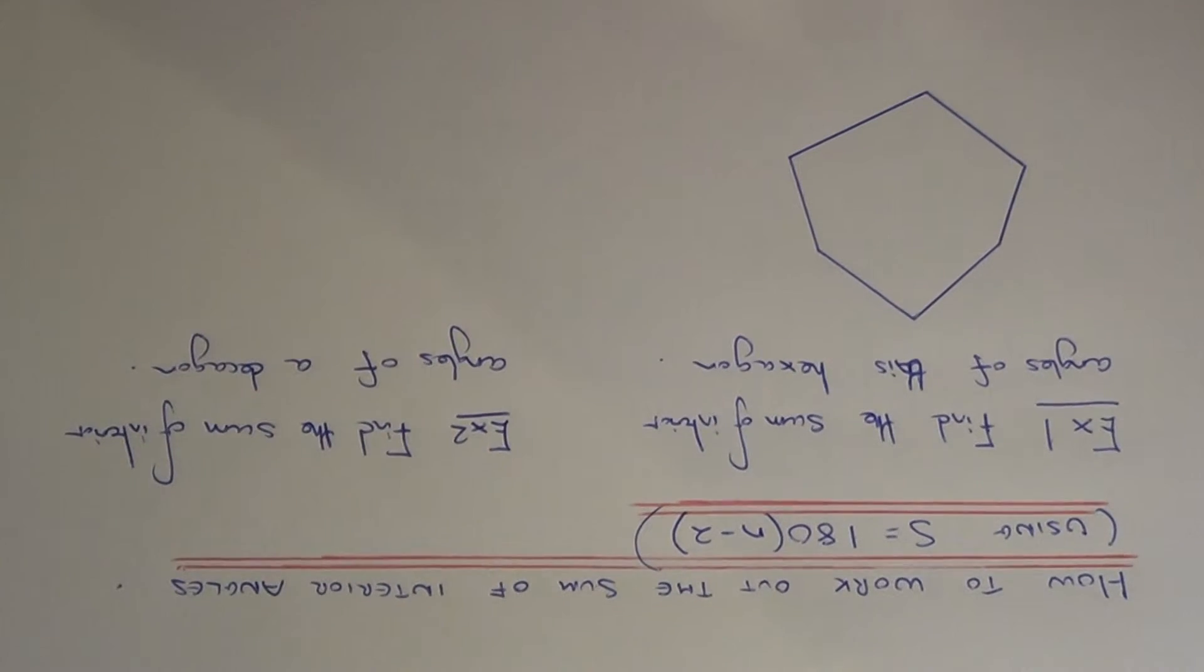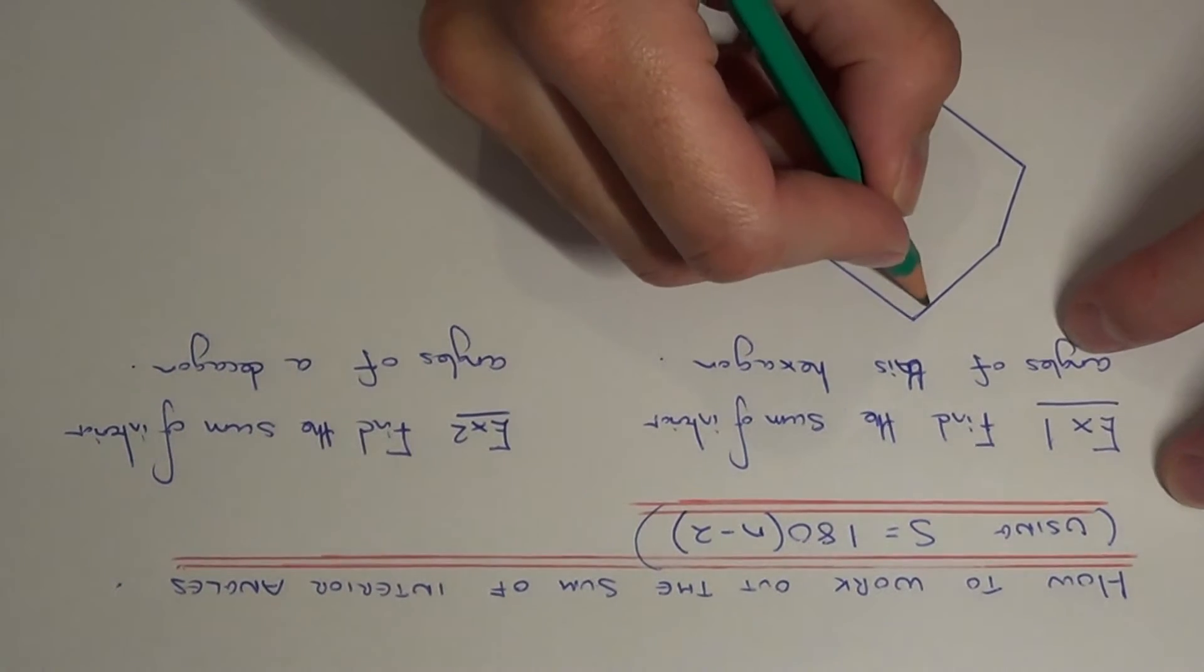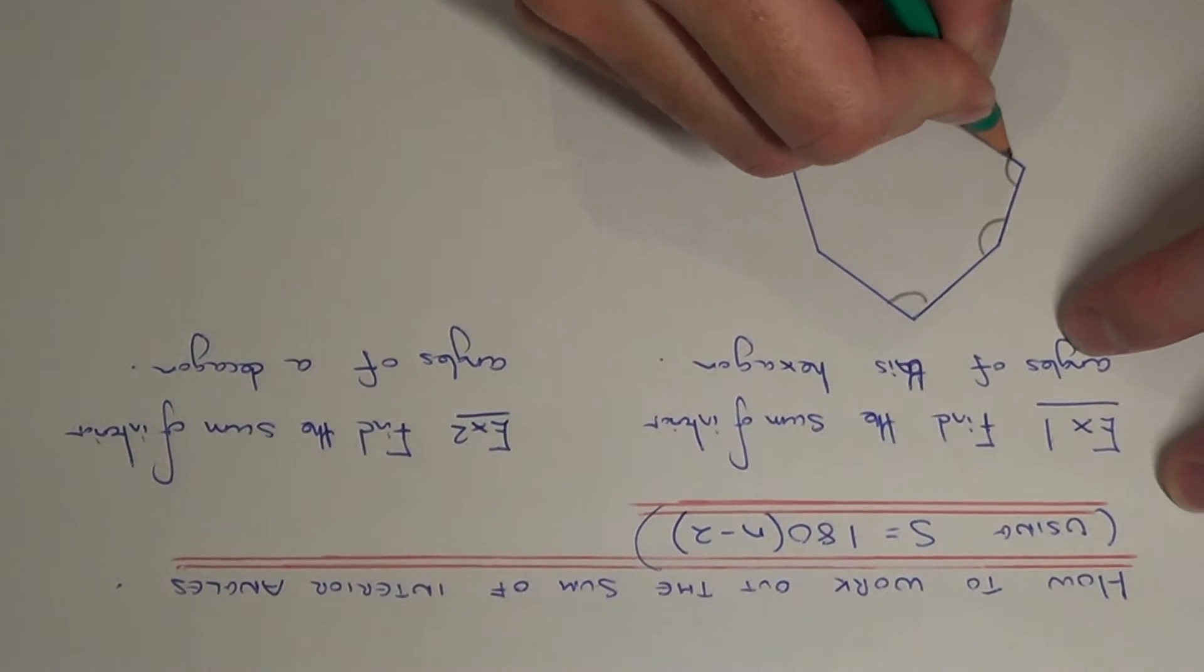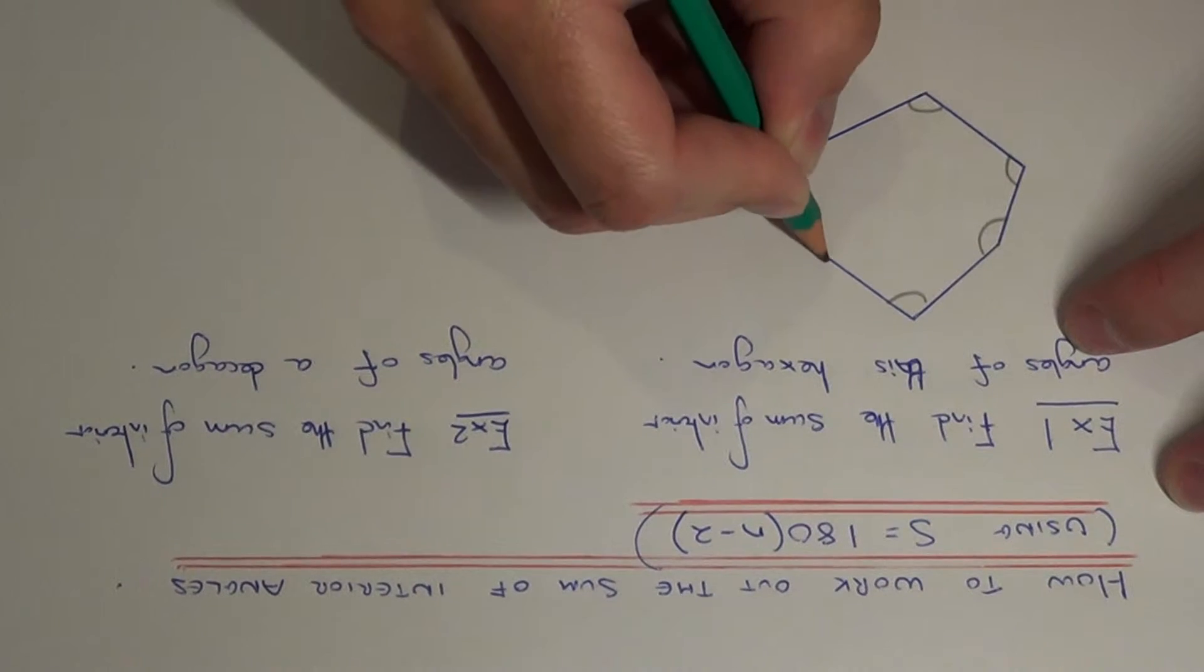So let's have a look at example 1 then. So we need to find the sum of interior angles of this hexagon, so we're after the total of all these inside angles.